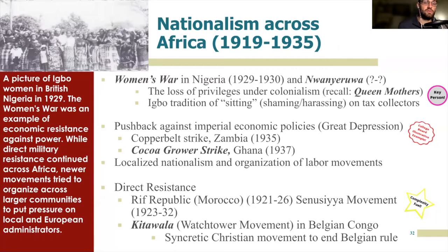Turning to increasing nationalism across colonial Africa during the interwar period — while there was direct resistance to imperial rule, such as the Rif Republic, a confederation of nomadic peoples against Spanish rule in northern Morocco, and the Senussi movement against the Italians in Libya, both were eventually defeated. The much more effective resistance was not direct military resistance. For example, in Nigeria during the Great Depression there was an outbreak of civil unrest historians have called the Women's War, because it mainly involved women — and in particular one woman named Nwanyeruwa, who is at the center of the whole thing.